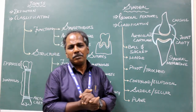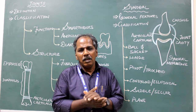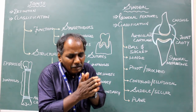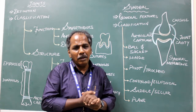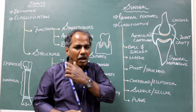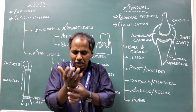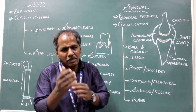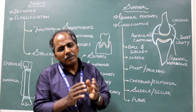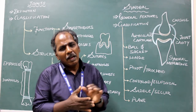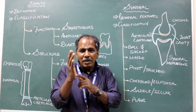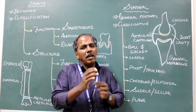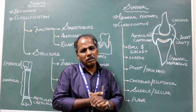Plane variety. In this type of joint, the two articular surfaces are smooth and allow only a slight gliding movement. Examples: acromioclavicular joint, intercarpal joints (the joints within the carpal bones), intertarsal joints (the joints within the tarsal bones), intermetacarpal joints (between the metacarpal bones), and intermetatarsal joints.